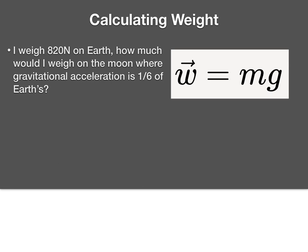Let's do an example problem. It says I weigh 820 newtons — again, this is a force, so we use newtons for weight. A kilogram is a mass. So 820 newtons on Earth. How much would it weigh on the moon, where the gravitational acceleration — otherwise known as little g — is one-sixth of Earth's? So on Earth, g equals negative 9.8, and g on the moon is one-sixth of g on Earth, which gives us one-sixth of 9.8, so about 1.633 m/s².